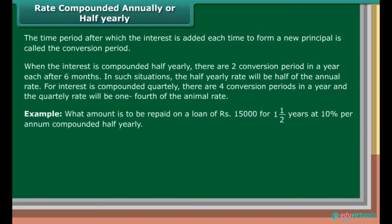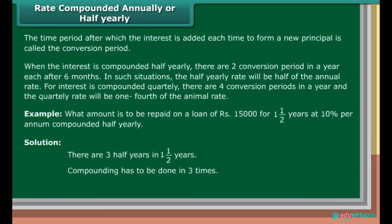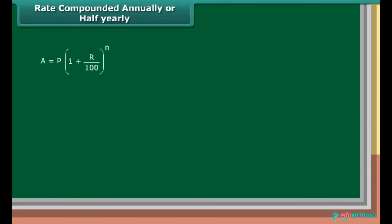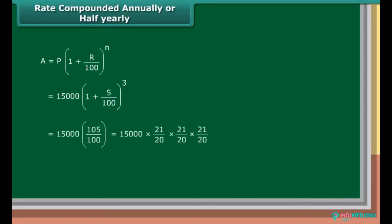Example: What amount is to be repaid on a loan of Rs. 15,000 in one and a half years at 10% per annum compounded half yearly? Solution: There are 3 half years in one and a half years, so compounding has to be done 3 times. Rate of interest is equal to half of 10%, which is equal to 5% half yearly. A is equal to P into (1 plus R upon 100) raised to the power N, which is equal to 15,000 into (1 plus 5 upon 100) raised to the power 3, which is equal to 15,000 into (105 upon 100), which is equal to 15,000 into (21 upon 20) into (21 upon 20) into (21 upon 20), which is equal to Rs. 17,364.37.